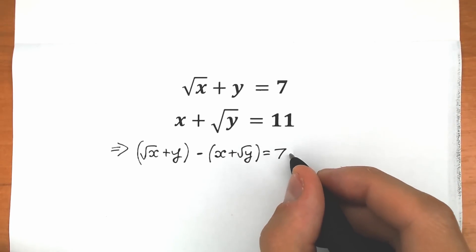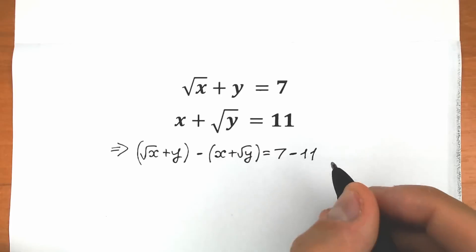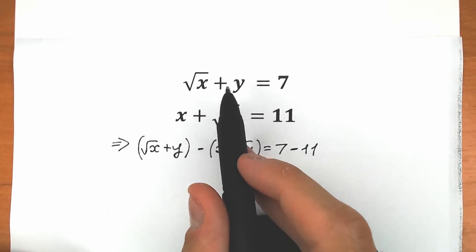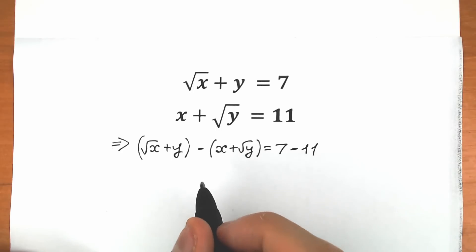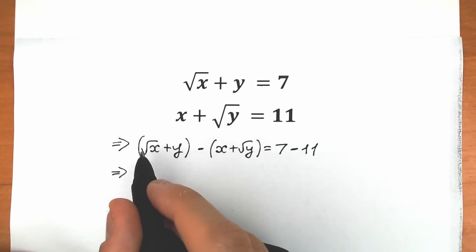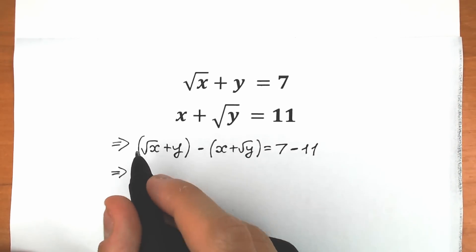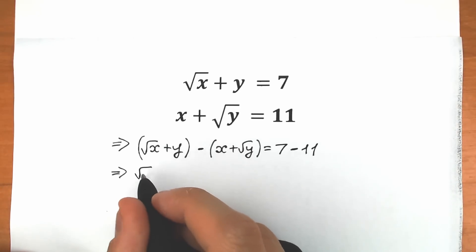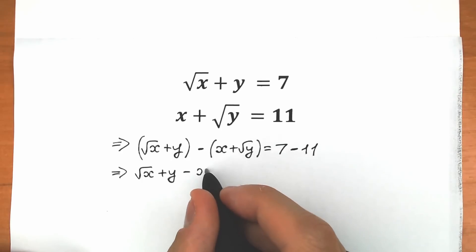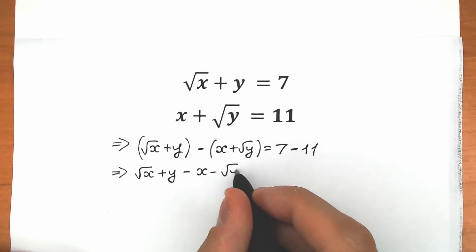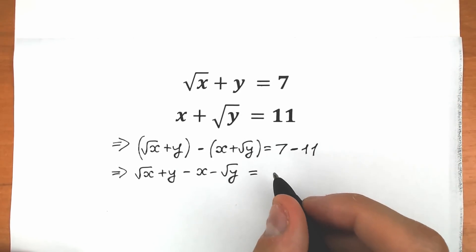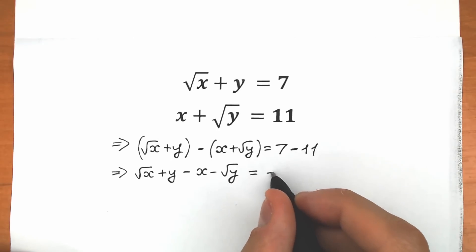Let's write this in full: 7 minus 11. Now let's simplify a little bit and open our parentheses. We have a plus sign so we can cancel those parentheses. So we have square root of x plus y, minus x, and minus square root of y — because we have a minus sign behind those parentheses. This equals minus 4.